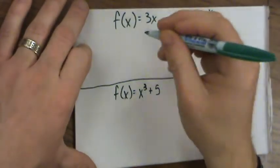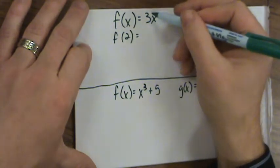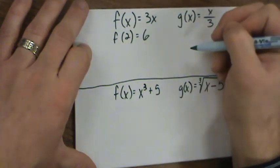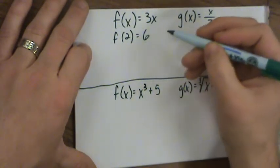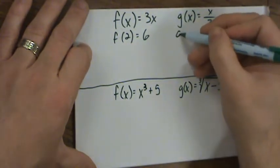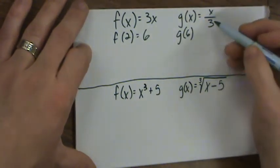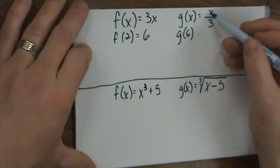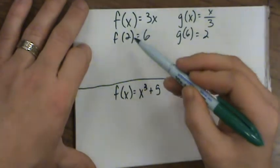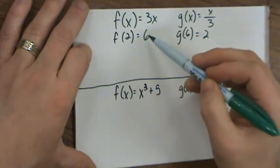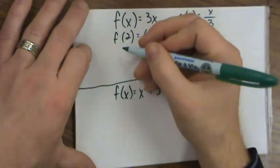Let's look at a concrete example. Say f of x equals 3x and g of x equals x divided by 3. Put 2 into f: f of 2 is 3 times 2, which is 6. Now take that output, 6, and put it into g: g of 6 is 6 divided by 3, which is 2. We put in 2 and got back 2.